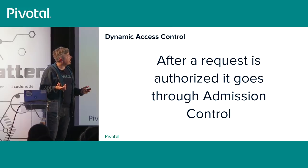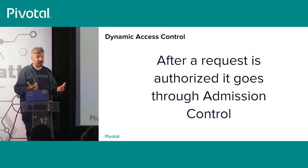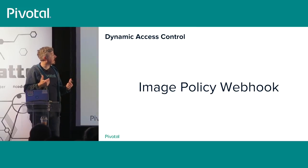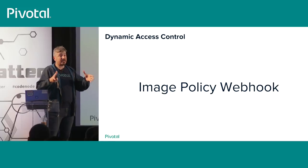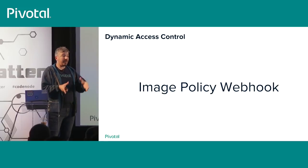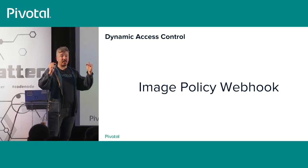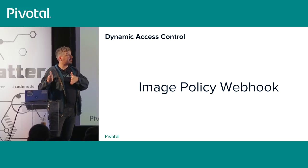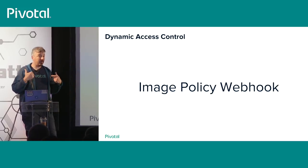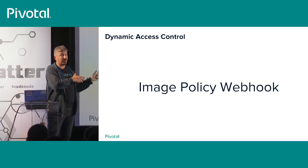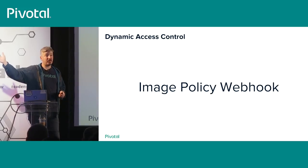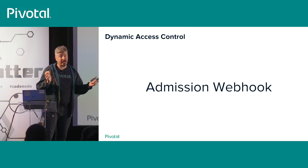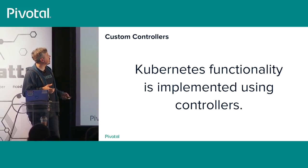There's dynamic access control. When you make a request to Kubernetes, it goes through admission controls. You can put in webhooks — for example, a small app that checks the image name to ensure it comes from your own registry. If not, it denies the request. Now anyone using my Kubernetes cluster must pull images from my Docker registry and can't pull any old garbage from the public Docker registry.